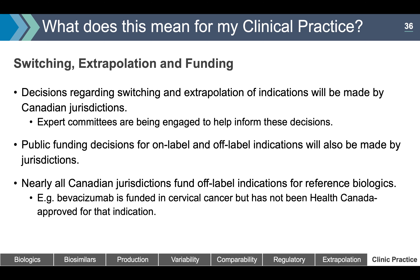How will decisions on switching, extrapolating, and funding be made? Decisions regarding switching and extrapolation of indications will be made by the Canadian jurisdictions, with expert committees engaged to help inform these decisions. Public funding decisions for on-label and off-label indications will also be made by the jurisdictions. Nearly all Canadian jurisdictions fund off-label indications for reference biologics — for example, bevacizumab is funded in cervical cancer but has not been Health Canada approved for that indication.